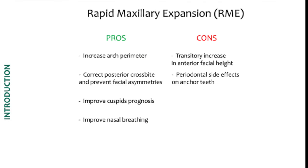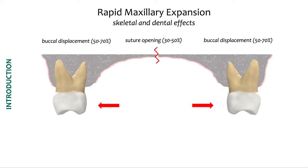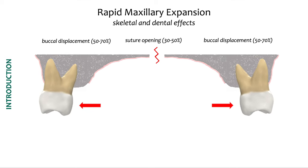Rapid Maxillary Expansion (RME) treatment is a common treatment to deal with maxillary transverse deficiencies. Although it has very negative side effects, especially in the periodontium, we didn't find that many studies analyzing these effects using CBCT in a three-dimensional aspect. Thus, the aim of this study was to evaluate changes in buccal bone plate thickness of the maxillary permanent first molars after RME, using CBCT images, and to compare changes between RME in the mixed dentition with the appliance anchored to deciduous teeth and RME in the permanent dentition with the appliance anchored on permanent teeth.